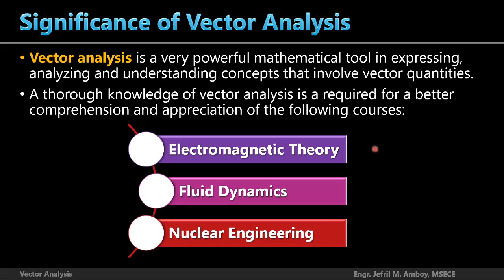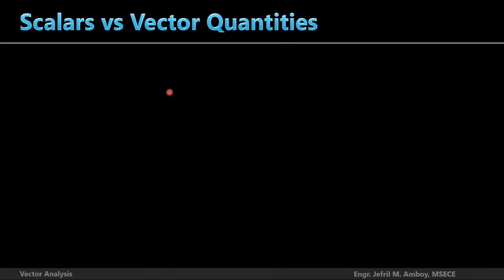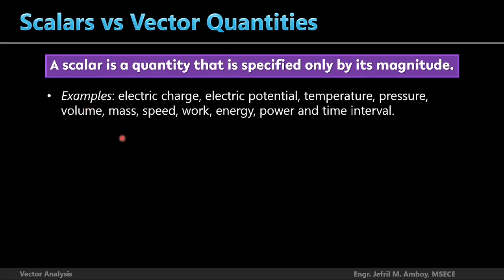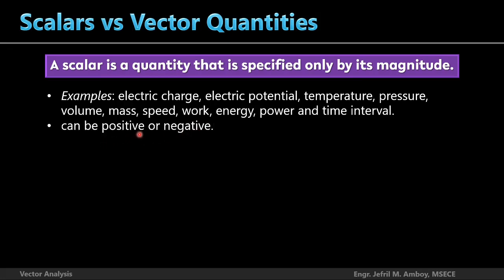Let's start our study of vectors by comparing vector quantities with scalar quantities. A scalar is a quantity specified only by its magnitude. Examples of scalar quantities in electromagnetics include electric charge, electric potential (related to voltage), temperature, pressure, volume, mass, speed, work, energy, power, time interval, and even electric current. Scalar quantities have only magnitudes.